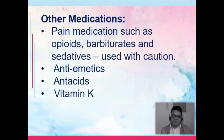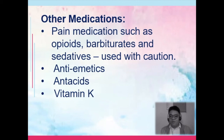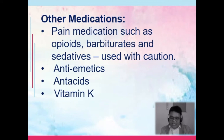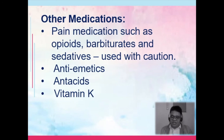Other medications include pain medications, opioids, barbiturates, and sedatives — used with caution. These are cautious because one effect is CNS depression; if the patient is on these medications, changes in level of consciousness from hepatic encephalopathy may not be detected right away. Antiemetics are given if the patient has nausea and vomiting. Antacids decrease gastric discomfort and the risk for gastric bleeding. Vitamin K addresses coagulation problems.